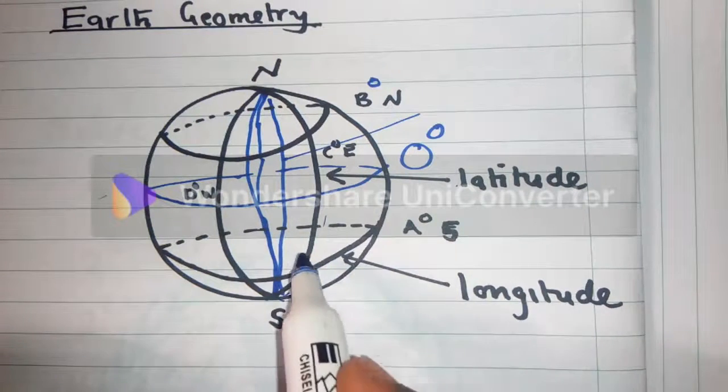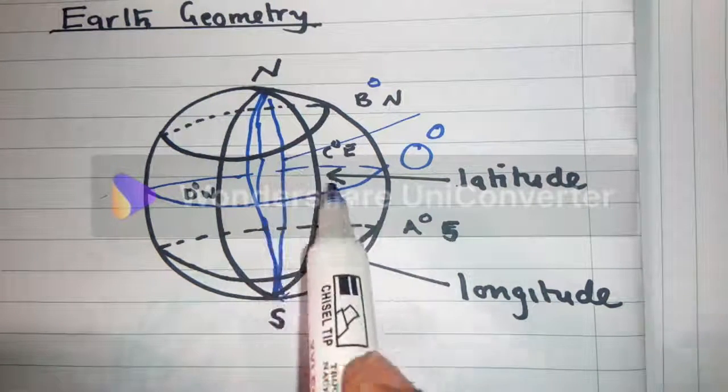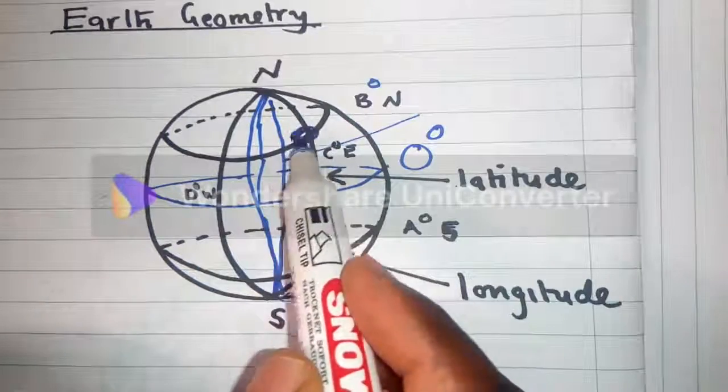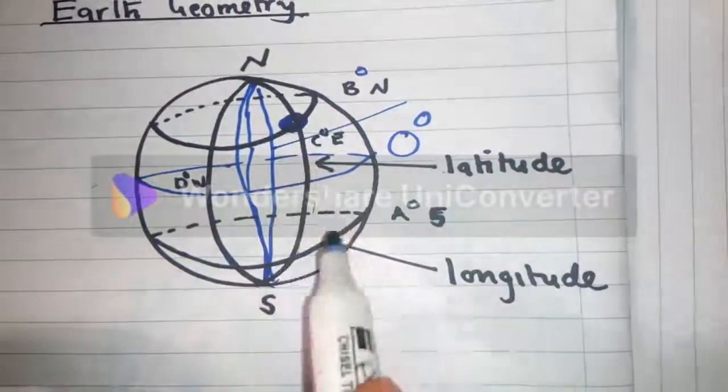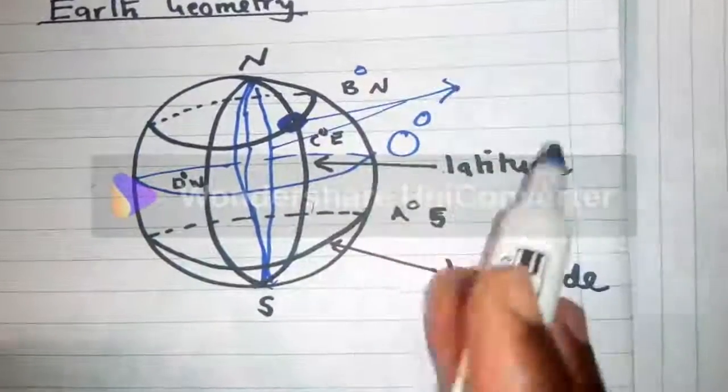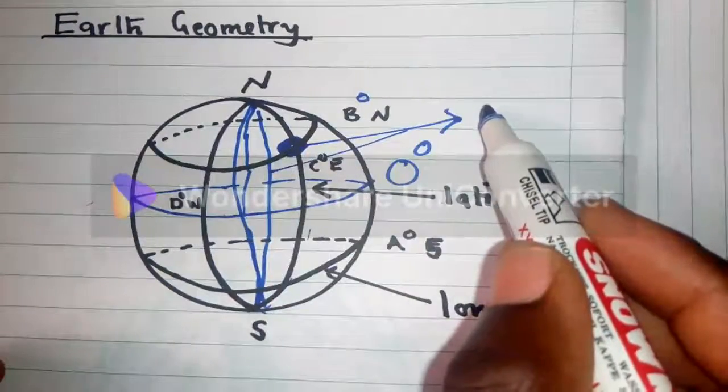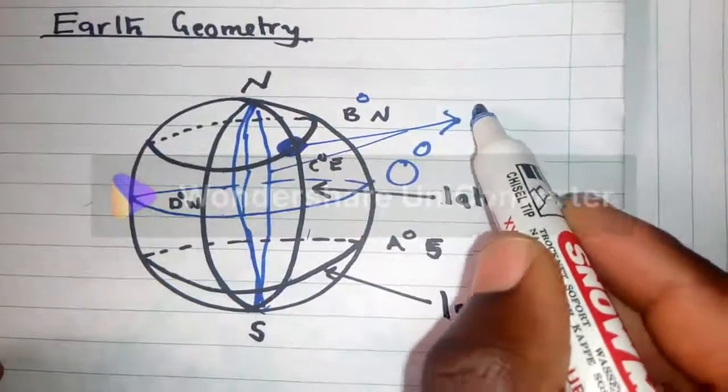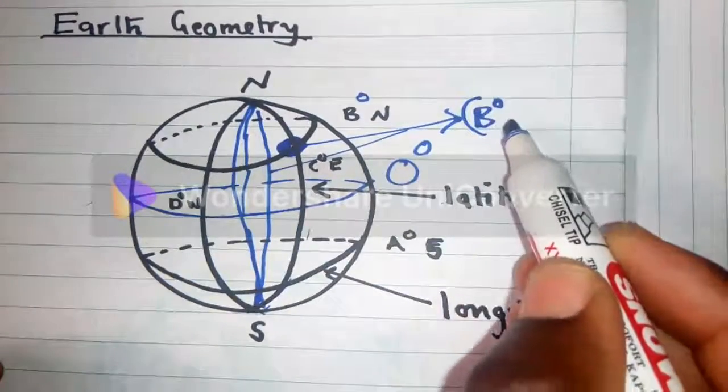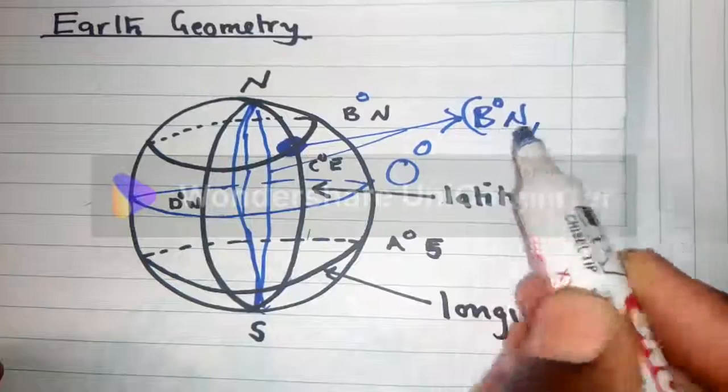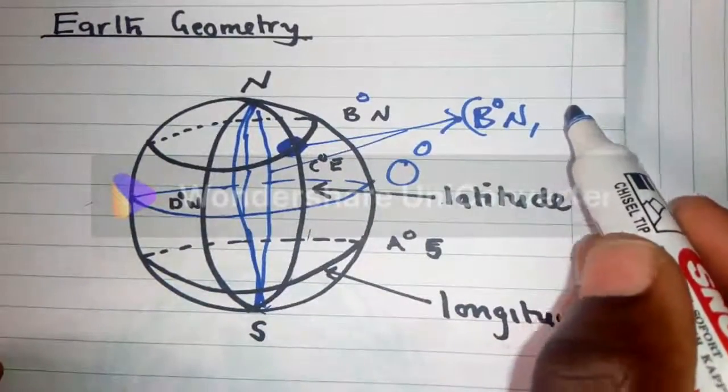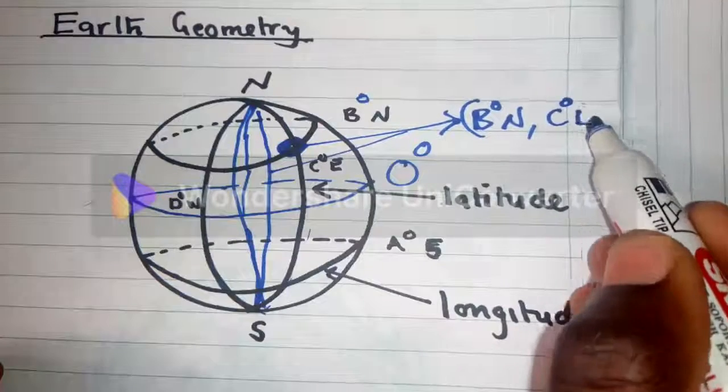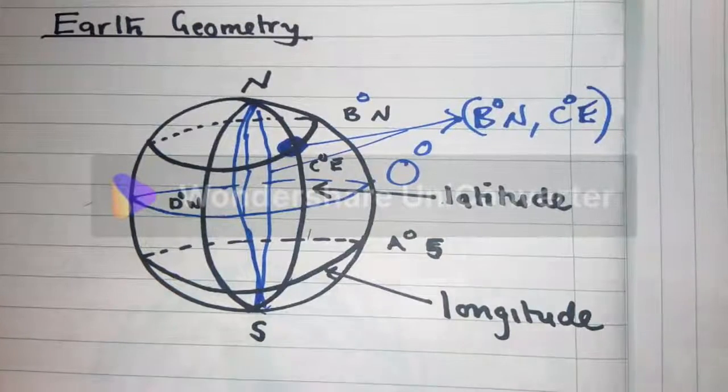And then maybe somebody says, okay, could you locate this position over here? What position is this? So the position here, let me put an arrow to show. The position here will be B degrees North, C degrees East. So this is a position.